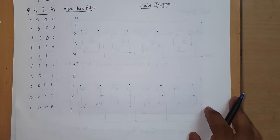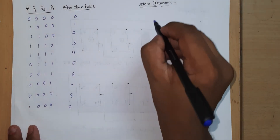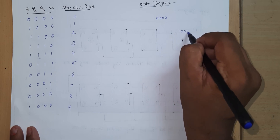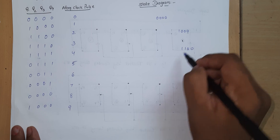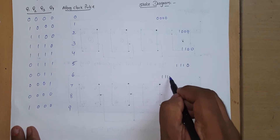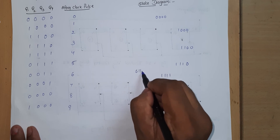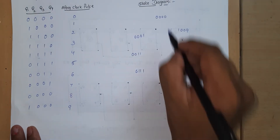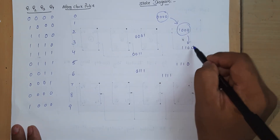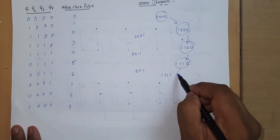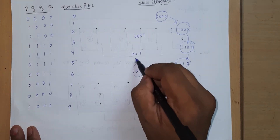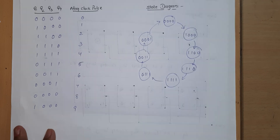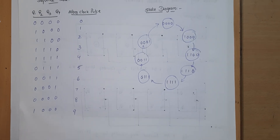Now see the state diagram. Initially the state is 0000. After the first clock pulse it transitions to 1000, then to 1100, then 1110, then 1111, then 0111, then 0011, then 0001, and back to 0000. By connecting these states in sequence, this is the state diagram of the 4-bit twisted ring counter. As discussed, this counter produces a unique sequence of states.